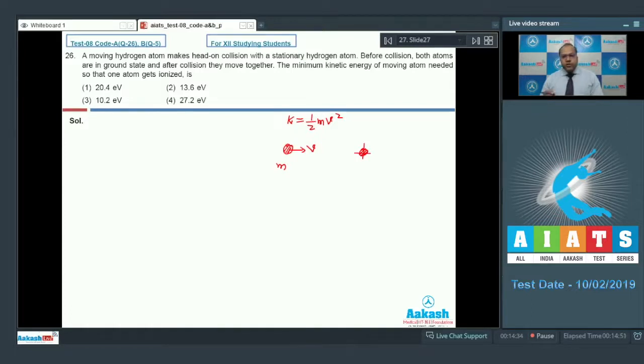we know that, in order to ionize one of the atom, the condition is half into mu into V relative square is greater than or equal to delta E. So in this case, the reduced mass of the system can be written as M into M by 2M, so M by 2.